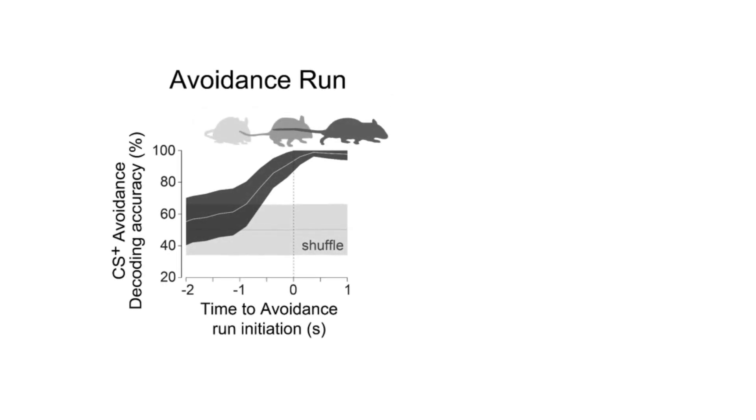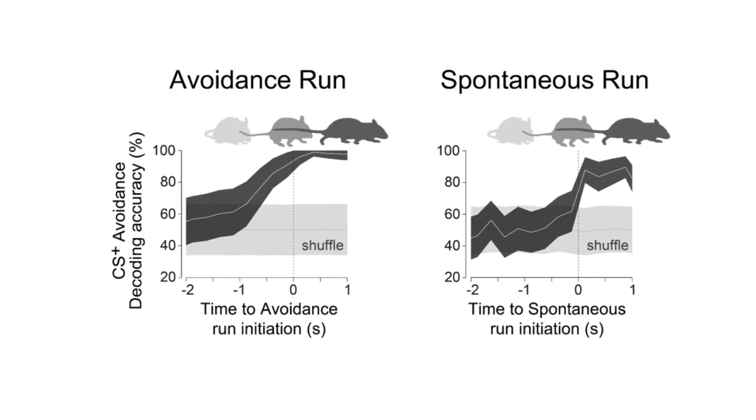While PFC strongly represents CS+ at the onset, it does not predict avoidance behavior. However, right before starting the avoidance running response, PFC has information about the upcoming avoidance action. This, in contrast, is not observed when we consider analogous spontaneous run movements, indicating that this prefrontal neural signature we observe before the avoidance run is specific to the impending avoidance action.